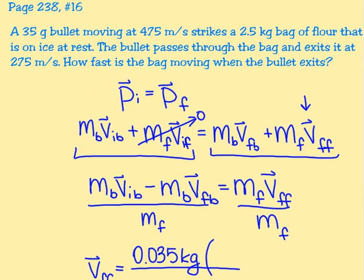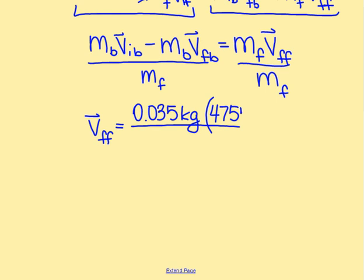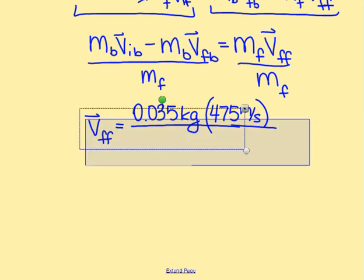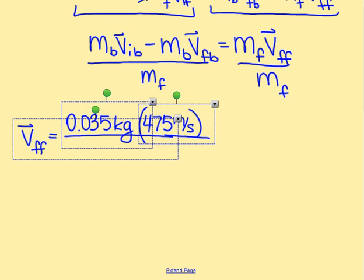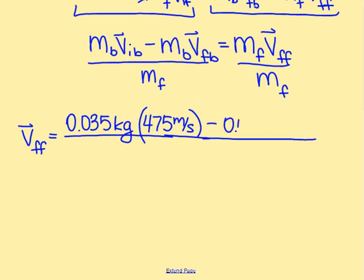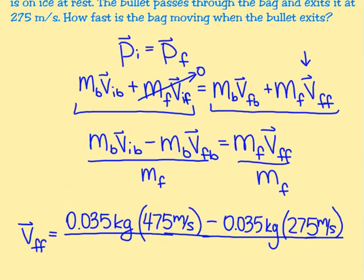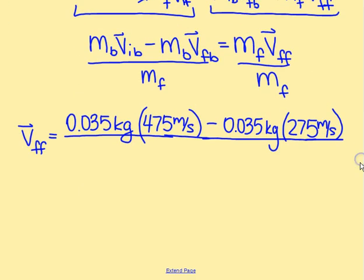The bullet's initial velocity is 475 meters per second. The bullet's final velocity through the bag is 275 meters per second. Dividing by the mass of the flour bag, which is 2.5 kilograms, we find that the final velocity of the bag of flour is 2.8 meters per second.